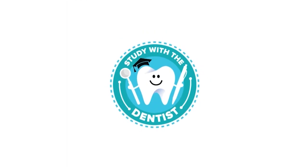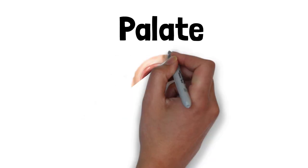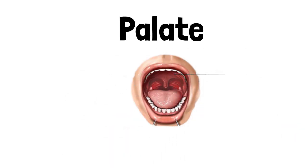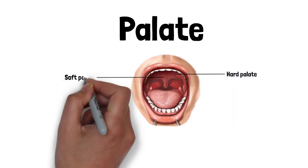Hello and welcome everyone. Today we'll be discussing the palate, which forms the roof of the oral cavity. It is divided into two parts: the anterior hard palate and the posterior soft palate.